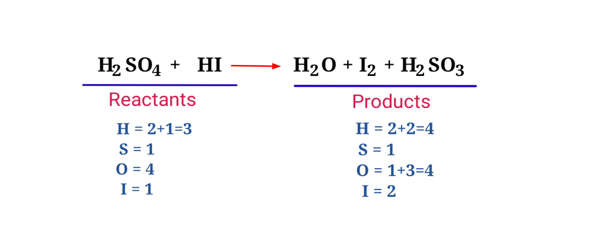In this equation, we need to balance the hydrogen and iodine atoms. To do this, we need to put a coefficient of 2 in front of HI.